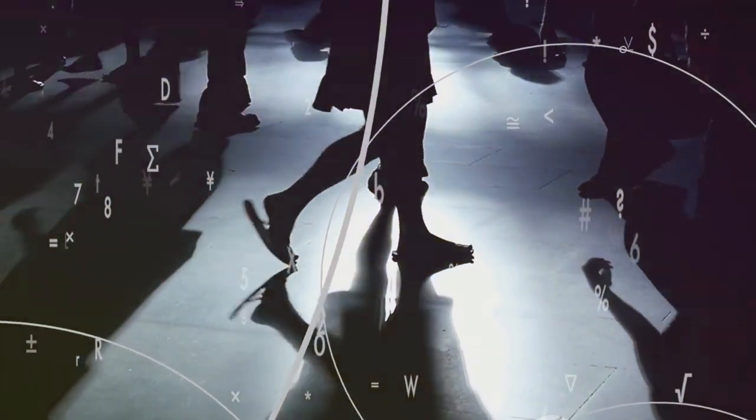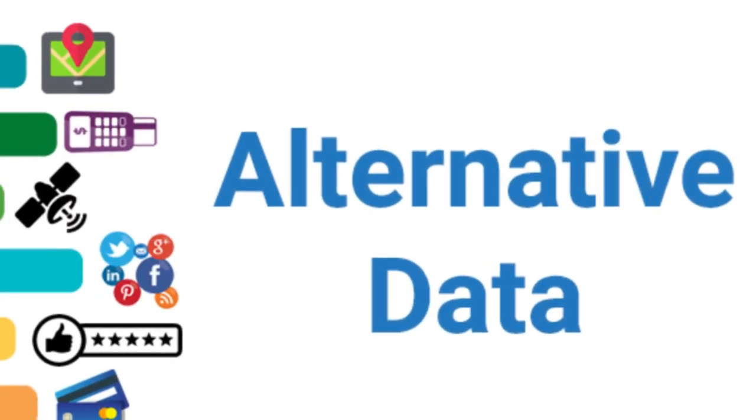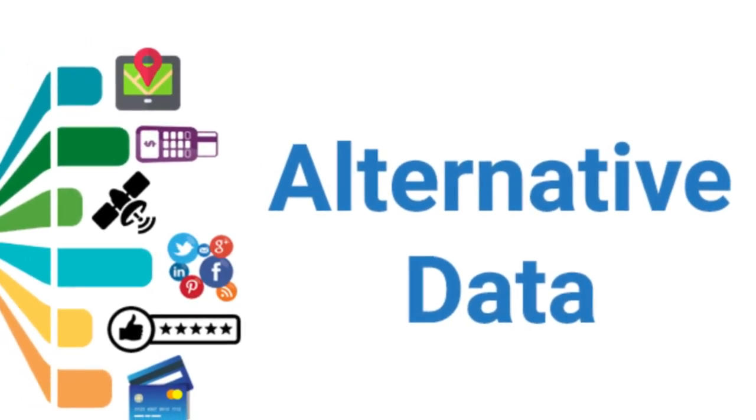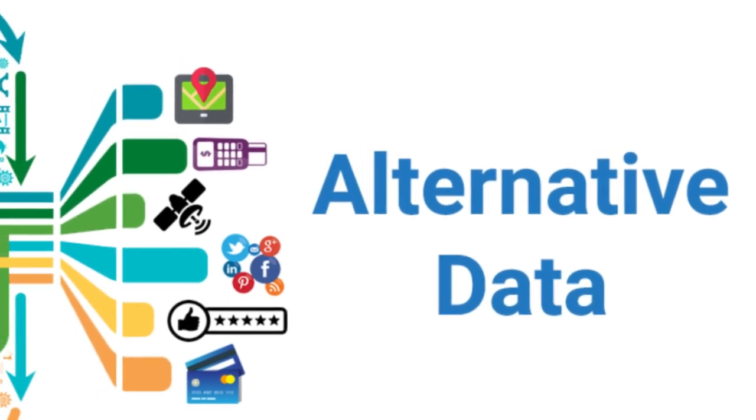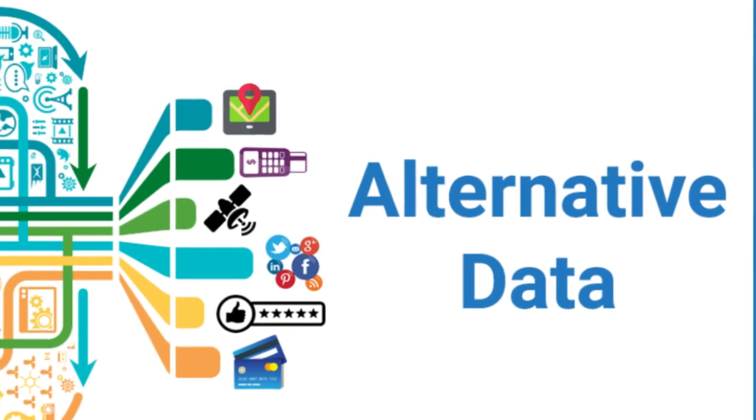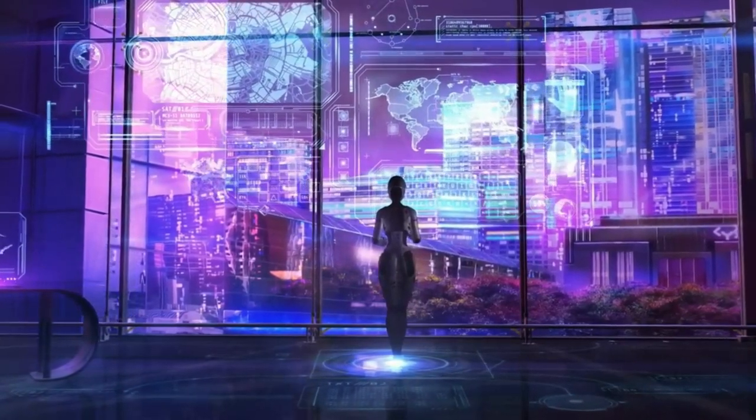So what is alternative data? It's essentially any data that falls outside the realm of traditional credit information. It can include anything from social media activity and online transactions to utility payments and even your education level.